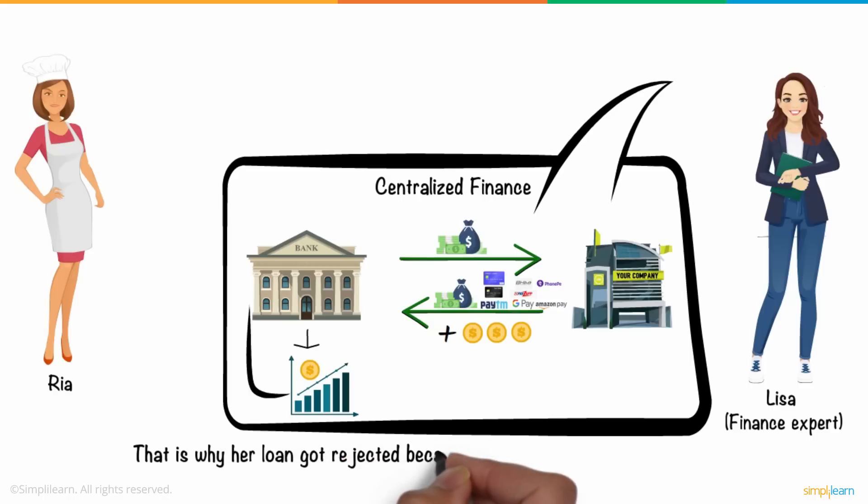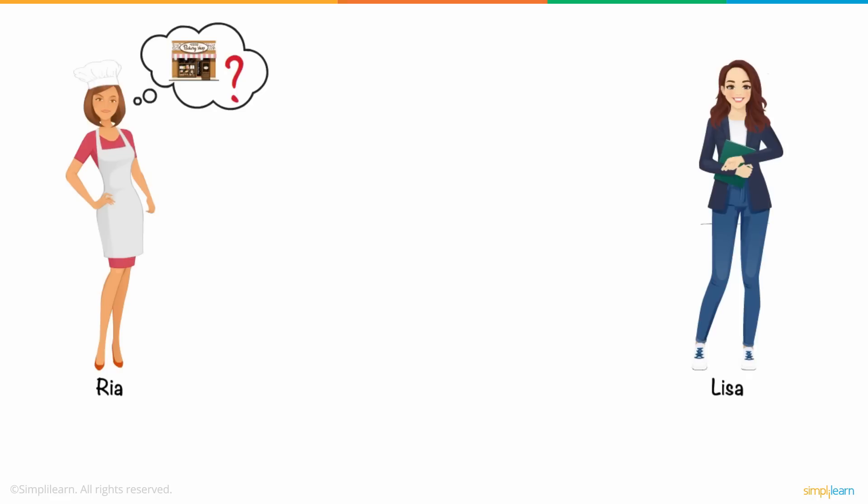And that is why her loan got rejected, because the loan amount exceeded the limit decided by the bank or third parties for her. Ria was upset with the thought of not being able to grow her business. And that is when Lisa suggested Ria to opt for decentralized finance, or DeFi.